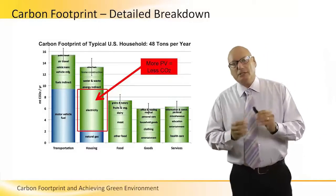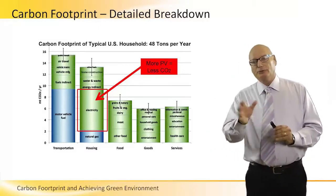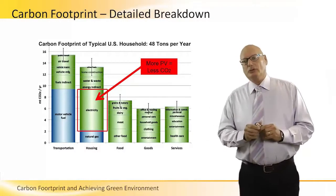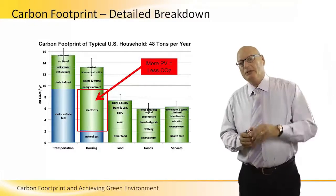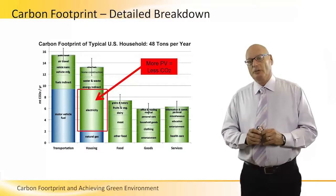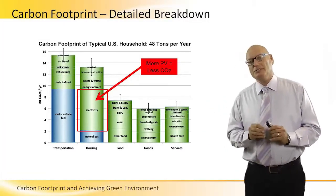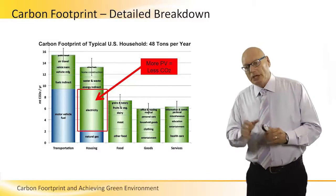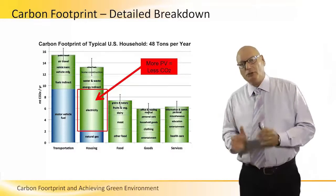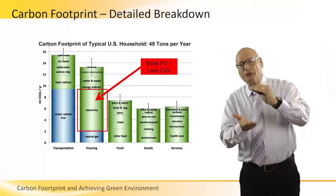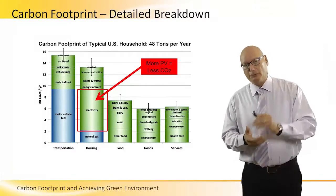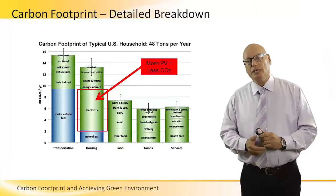Looking at more details on carbon footprint, I'd like to point specifically at the electricity category. More PV means less CO2. All the other subjects shown can be controlled, but the major part of housing's carbon footprint can be reduced by having PV systems.